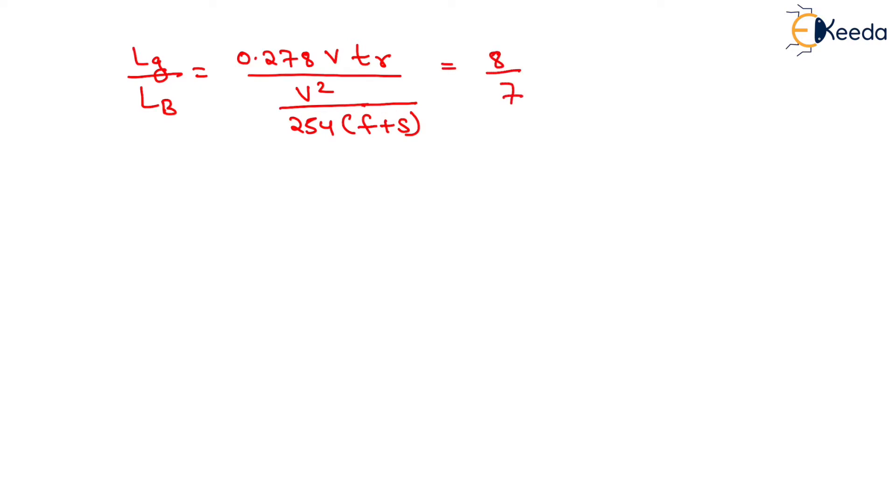Now we will put all the values: that is 0.278, the value of V is given as 70 km per hour, and the reaction time is given as 3 seconds, divided by 70 square upon 254. The value of F is given as 0.35 plus S equals to 8 by 7.